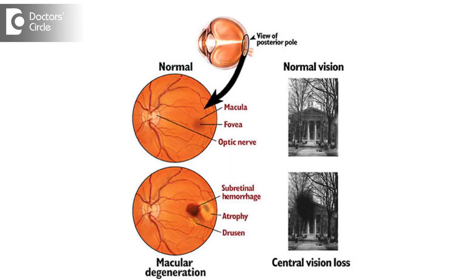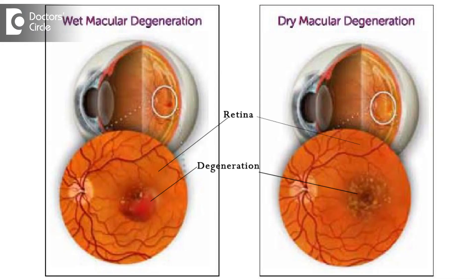The symptoms of AMD, or age-related macular degeneration, will depend upon the type of AMD. Broadly speaking, there are two varieties of age-related macular degeneration—one is called the wet type and the other is called the dry type. Usually the dry type is less symptomatic, or rather it's a very slowly progressive condition, and the wet type is a very rapidly progressive condition.